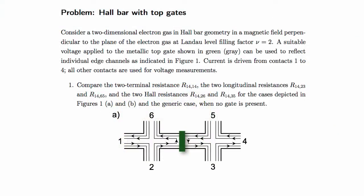In this exercise we apply the Landauer-Büttiker formalism to a Hall bar in which a top gate, shown in green, selectively reflects edge channels. The top gate reduces the charge carrier density under it and so reduces the effective filling factor. We assume that we have two non-degenerate modes transmitted along the edge in the bulk of the sample, and that only one mode is transmitted in the region of the top gate.